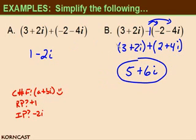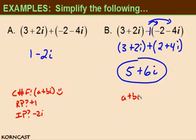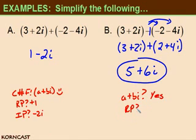Again, when adding or subtracting complex numbers, you're just going to collect like terms like you always have done. Is this in complex number form? Yes — a plus bi. The real part is 5 and the imaginary part is 6i.